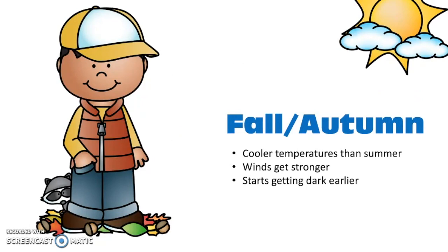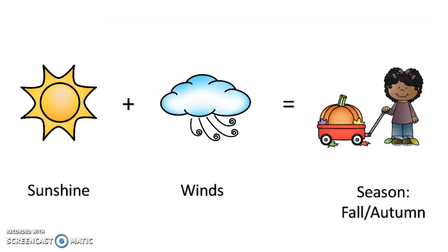After our summer season, when our weather is warm, we have fall or autumn. We can tell it's fall or autumn because our temperatures cool off, our winds pick up, our trees start to change color, and it starts getting darker earlier. Common weather for the fall — there's still sunshine, it's just not as warm. The winds start blowing the colorful leaves off the trees, and we get to experience our holidays such as Halloween and Thanksgiving.